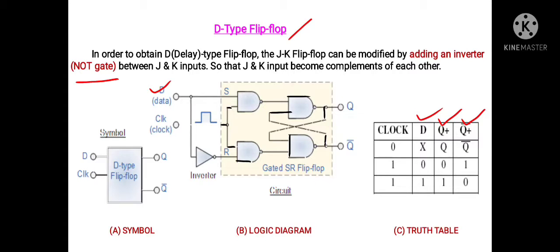Going through the first row of the truth table: when the value of the clock signal is zero, for any value of D input, there will be no change in output and no change in its complemented value. That means when no clock pulse is applied, the output does not change. In the second row, when the clock signal is applied and D equals zero, we get output Q as zero and Q-bar as one.